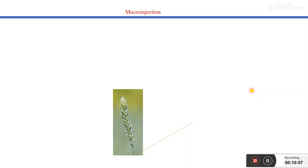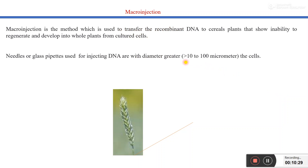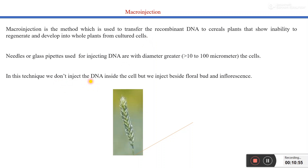The next important physical method of gene transfer is macro injection. In this method, we transfer our gene of interest using an injection with a diameter greater than 10 to 100 micrometers. In this method, we generally transfer recombinant DNA to cereal plants that show an inability to regenerate and develop into whole plants from cultured cells. Importantly, in this technique we do not inject DNA inside the cell — instead we inject it beside the floral inflorescence.